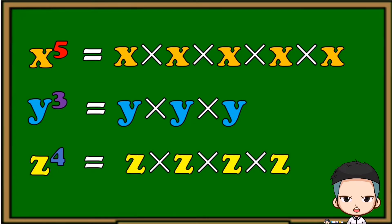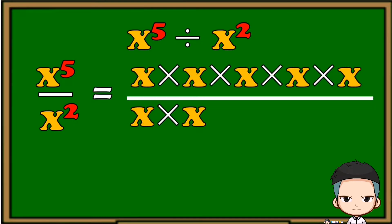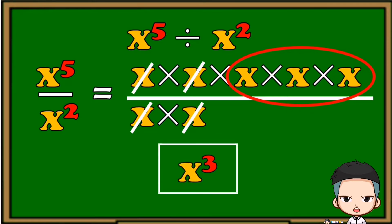Now let's divide polynomials. We have x raised to 5 divided by x squared. First, we put them in fraction form, then we expand each polynomial. We can cancel out two x's on the denominator by canceling out two x's on the numerator, leaving us with x times x times x. We put this in exponent form and the final answer is x raised to 3.